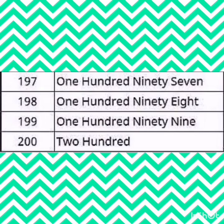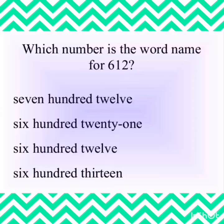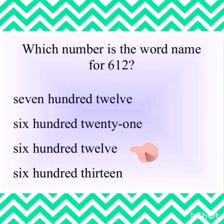Let's take one more example. Our next number is 612 — which is the right way of writing this number? Is it 712, 621, 612, or 613? The third answer is the correct answer — 612. We don't write 'and' while writing number names.